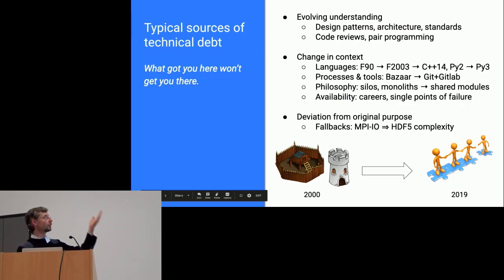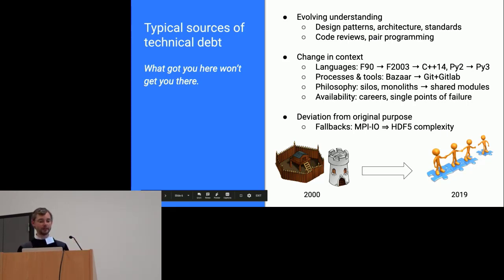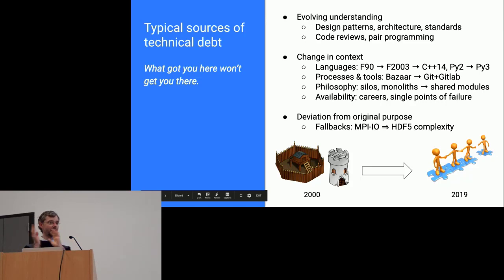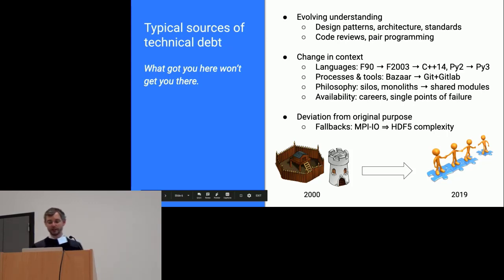Bazaar, which was developed in Python 2 and was abandoned, also became technical debt — even if not directly related to Abinit's internal development. Also, changes in philosophies: 20 years ago there was a lot of thinking around code silos, where different codes were developed in parallel, making the same mistakes and fixing the same bugs. Now we share and collaborate much more, which makes things developed with the previous philosophy become technical debt.